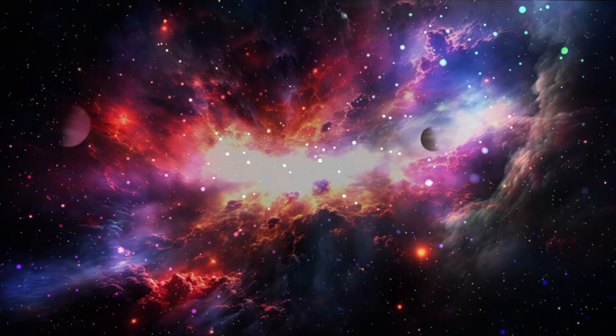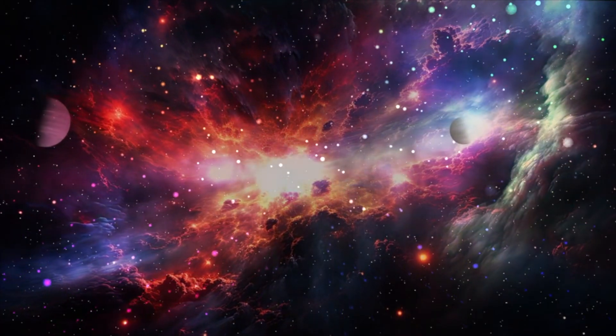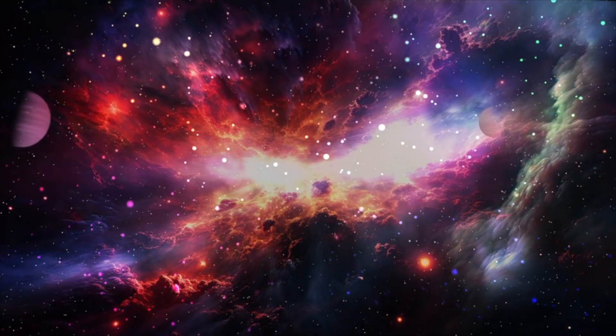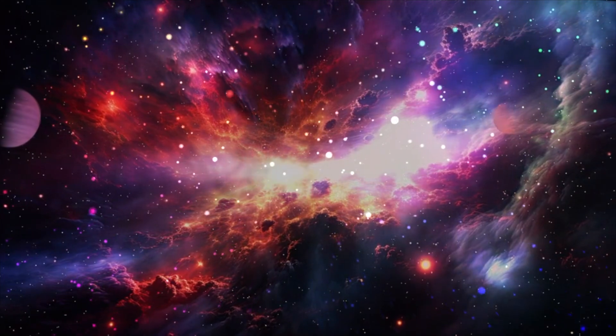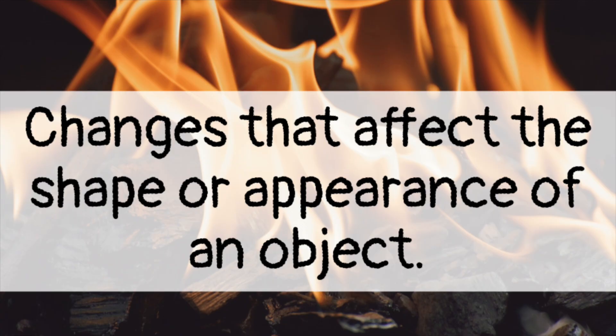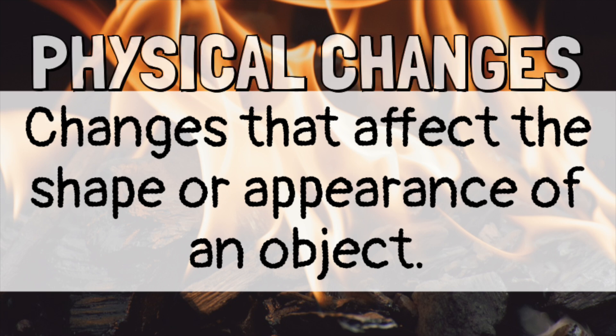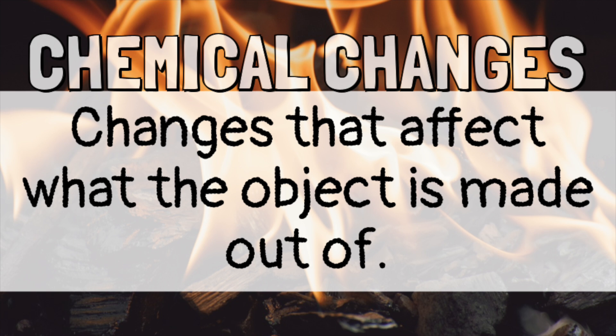The matter that makes up our universe doesn't stay the same forever. Matter can be changed. Some changes only affect the shape or appearance of an object — these are called physical changes. Other changes, called chemical changes, actually change what the object is made of. Chemical changes create new materials altogether.